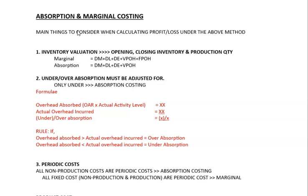The first consideration is inventory valuation. I will explain it in detail when doing the question. The opening inventory, closing inventory, and the production quantity are the three things that normally come under the cost of sales. So when you are in the cost of sales part, there will be opening inventory, production, and closing inventory, and how you value those inventories differs under each method.